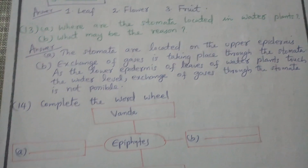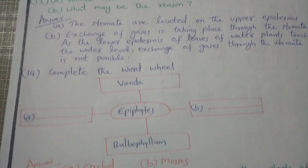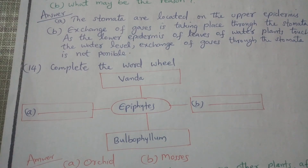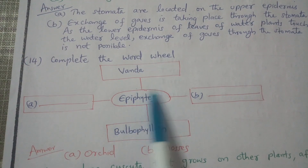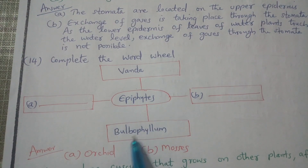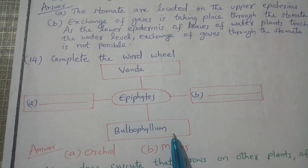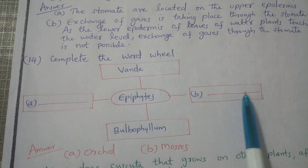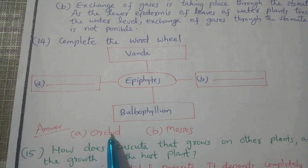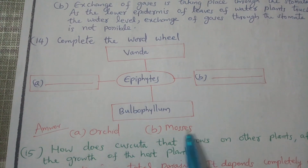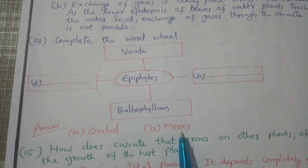Complete the bird wheel about epiphytes — examples include bulbophyllum, orchid, and mosses.